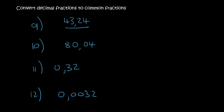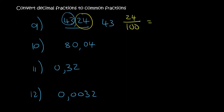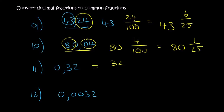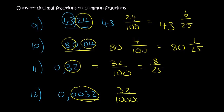Here are the last four questions. For 43.24: leave the 43 in front, two decimal places gives 24 over 100, which simplifies to 43 and 6 over 25. For 80.04: the 80 stays, 4 over 100 simplifies to 1 over 25, giving 80 and 1 over 25. For 0.32: two decimal places gives 32 over 100, simplifying to 8 over 25. For 0.0032: four decimal places means the denominator has four zeros, giving 32 over 10000, which simplifies to 2 over 625. I hope you can see how easy it is to convert from decimal fractions to common fractions. Thanks for watching.